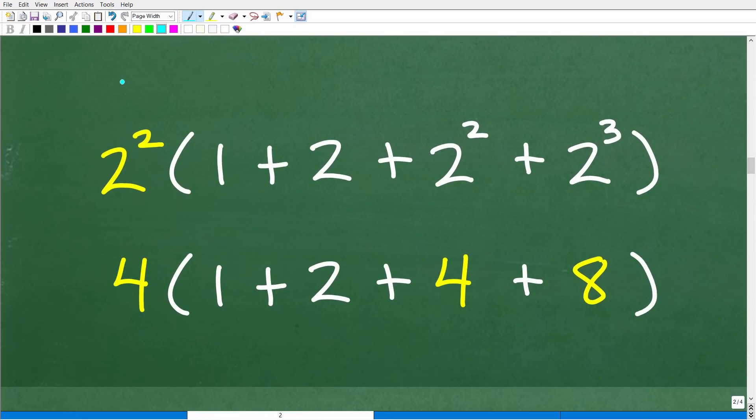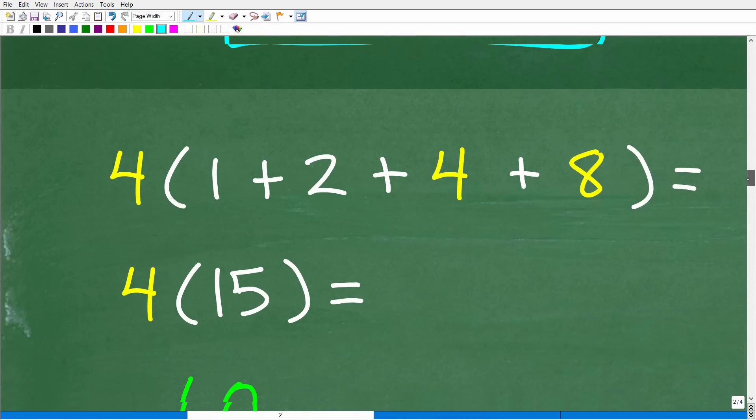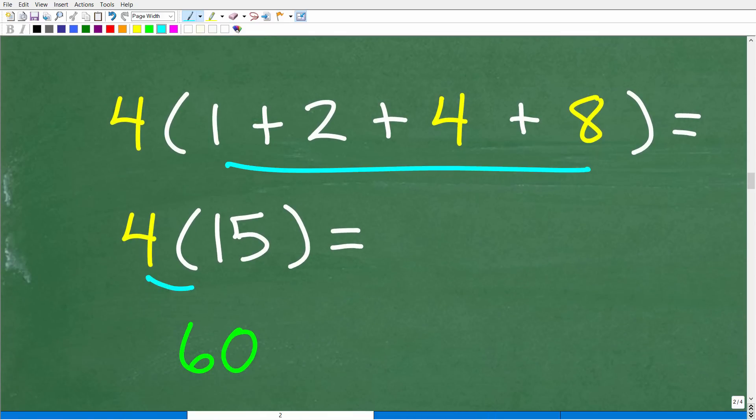Okay. So, again, we factored out the GCF. 2² is 4. Parentheses. So, I've got 1 + 2¹ or 2. Plus 2². 2² is 4. 2³ is 2 × 2, which is 8. So, now, we just have 4 × (1 + 2 + 4 + 8). Remember, order of operations, I have to do what's inside parentheses first. So, 1 + 2 + 4 + 8 is 15. So, we're down to 4 × 15, which, of course, hopefully, all of you can see that that is 60.